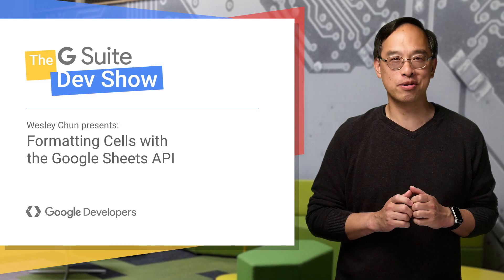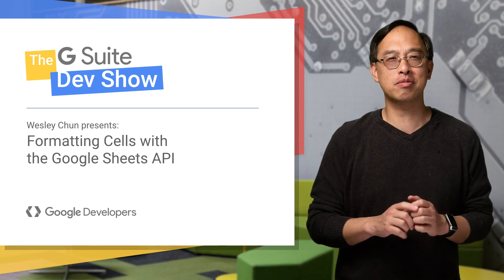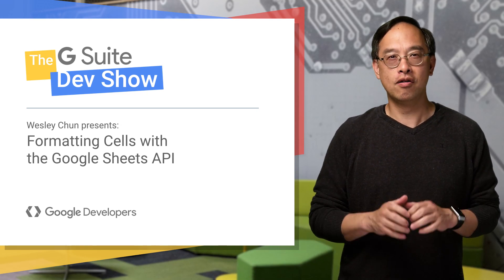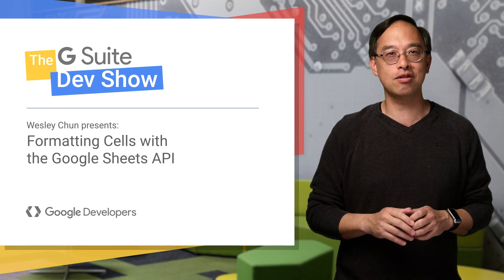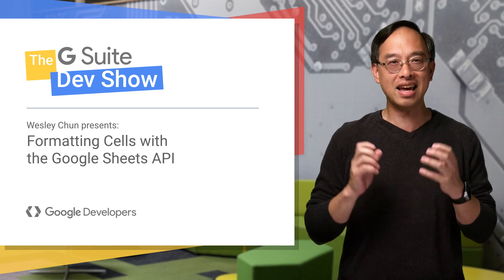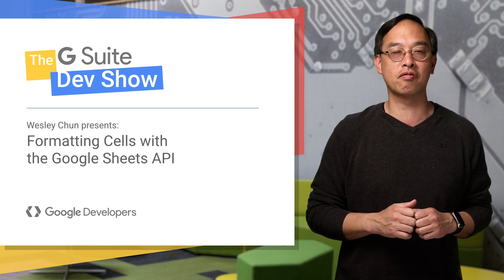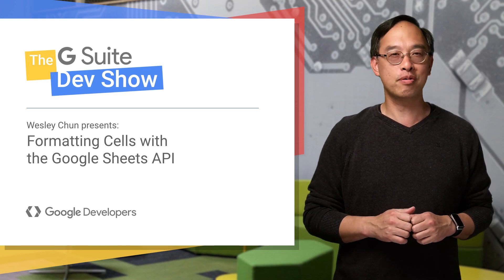Hi, this is Wesley Chun, engineer here at Google. Today we're going to show you how to do something you've never been able to do before. Format spreadsheet cells using Google Sheets API. Yeah, that's right. You couldn't do this in older API releases. And I've got a stack of Stack Overflow questions to prove it. So I hope you're as excited as I am.